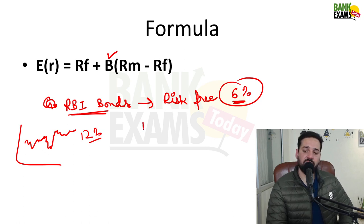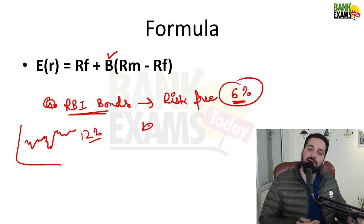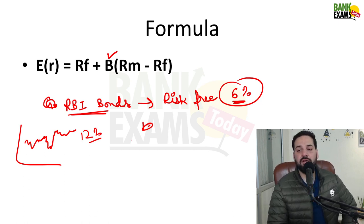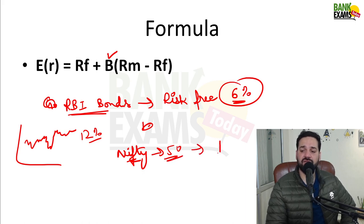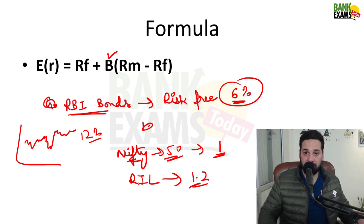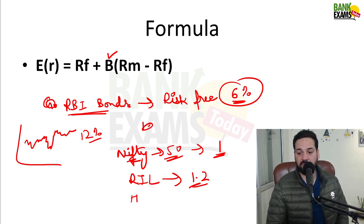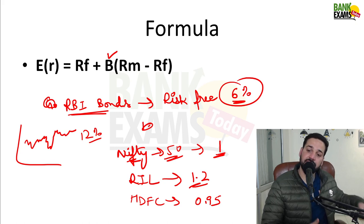If beta is more than one, that means risk is higher than the market. If beta is less than one, risk is lower than the market. For example, let's say Nifty (a basket of 50 stocks) has a beta of 1. Reliance Industries has a beta of 1.2 — that means it is more risky. HDFC Bank's beta is 0.95 — it is less risky than Nifty 50.